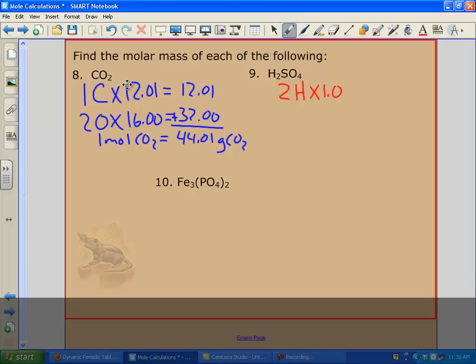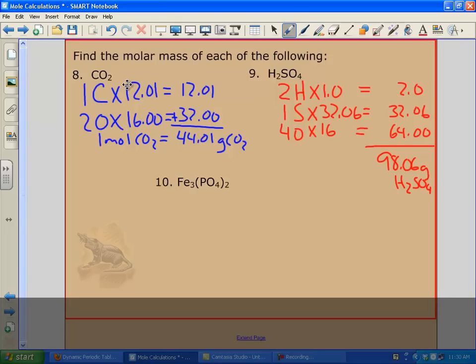Let's work the next one, number nine on your sheet. Hydrogen is one, sulfur we've done before, but I looked it up again, it's 32.06. Oxygen, we've got four of them. So two hydrogens, one sulfur, four oxygens. We're going to multiply those out. We've got two for hydrogen, 32.06 for sulfur, and 64 for oxygen. We add all those up, we're going to get 98.06 grams of H2SO4, which is sulfuric acid. That is equal to one mole of sulfuric acid.